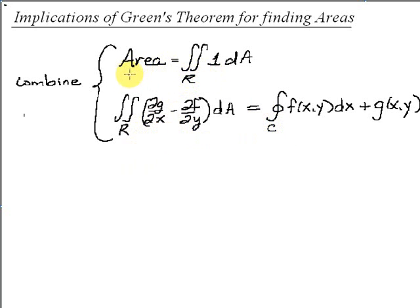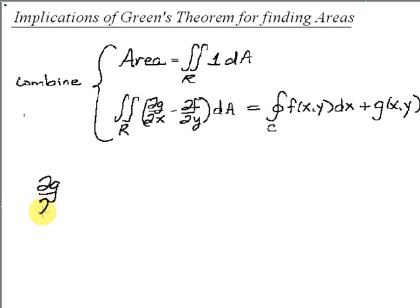Remember, the area of a region R is equal to the double integral over R of 1 dA. And Green's theorem refers to the double integral over R of the partial derivative of g with respect to x minus the partial derivative of f with respect to y. So what we need is these two integrals to match up — how can we get ∂g/∂x minus ∂f/∂y to equal 1?